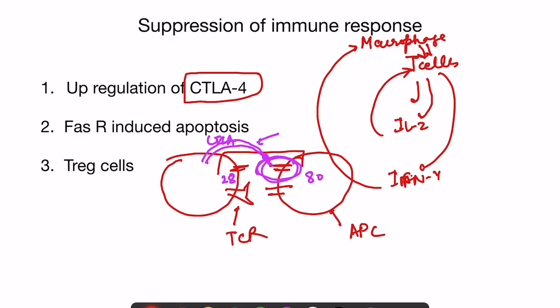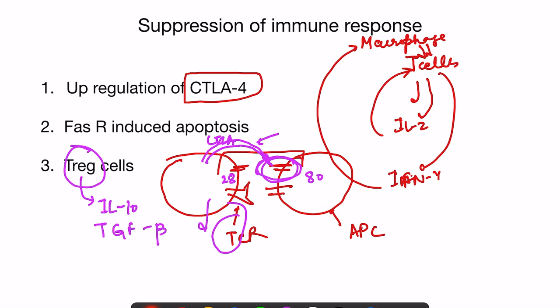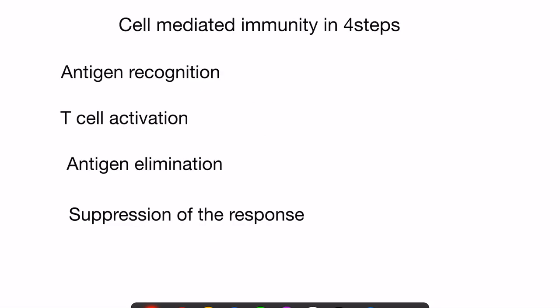Second, T cells start undergoing apoptosis after a given number of activations. Third, T-regulatory cells — a subset of helper T cells — secrete interleukin-10 and TGF-beta (transforming growth factor beta). These act on antigen-presenting cells and inhibit synthesis of MHC2 proteins and co-stimulatory proteins, so the APCs can no longer effectively present antigen to T cells, thereby dampening the immune response.